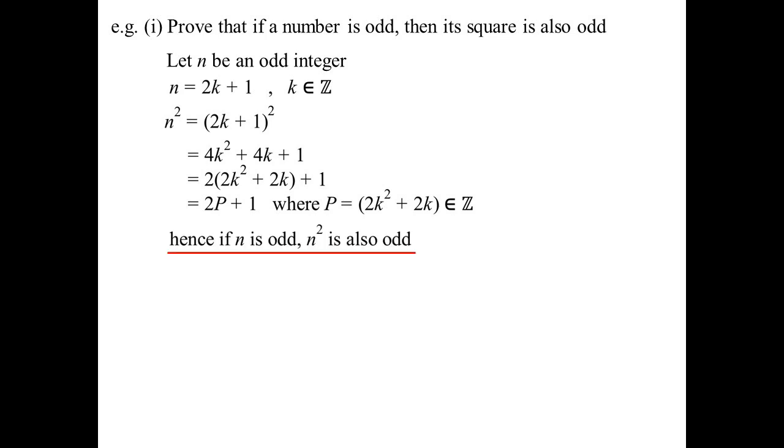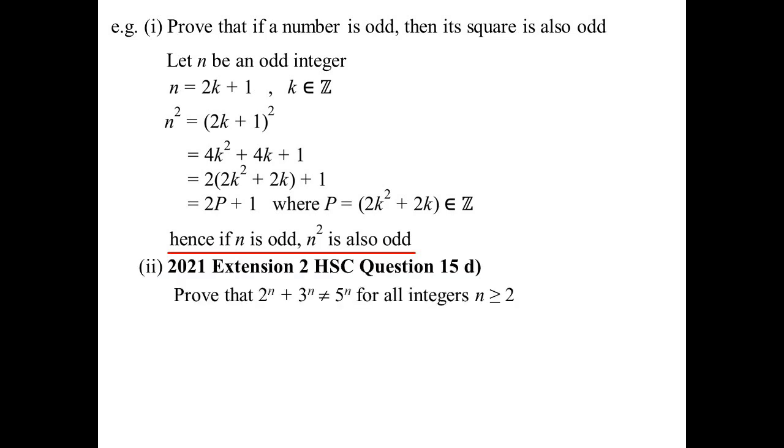There's your direct proof and the conclusion: hence, if N is odd, N squared must also be odd.